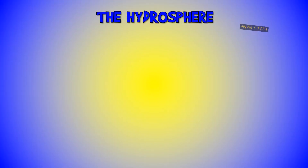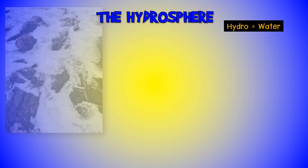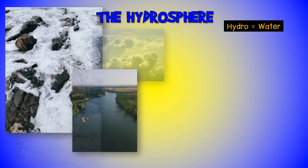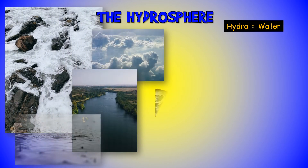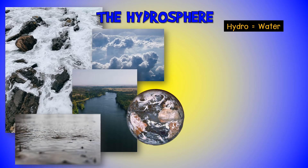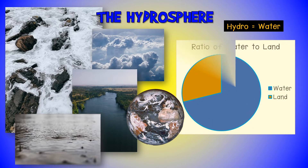The hydrosphere. The word 'hydro' means water. The hydrosphere consists of all the water that covers and surrounds the Earth — in the oceans, rivers and lakes on the surface, as well as groundwater under the surface. 71% of the Earth is covered with water, whilst 29% is land.